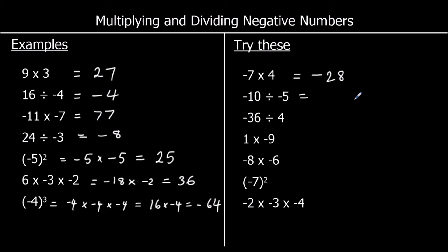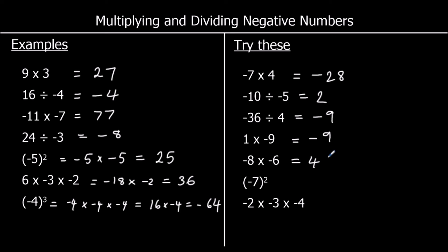Question 2: a negative divided by a negative is positive, and 10 divided by 5 is 2. Question 3: a negative divided by a positive is negative, and 36 divided by 4 is 9, so negative 9. Question 4: a positive times a negative is negative, and 1 times 9 is 9, so negative 9.